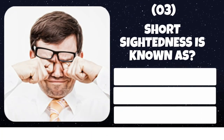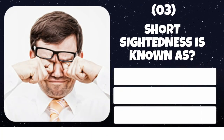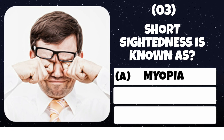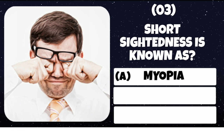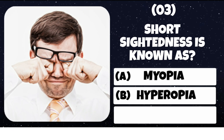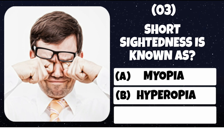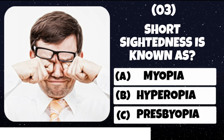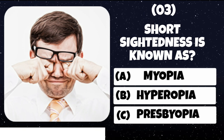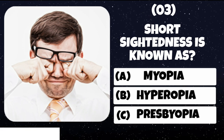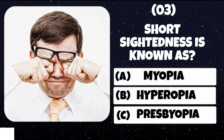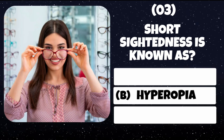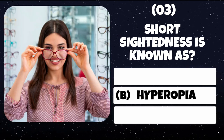Question number 3. Short-sightedness is known as. Option A: Myopia. Option B: Hyperopia. Option C: Presbyopia. Correct answer is Hyperopia.